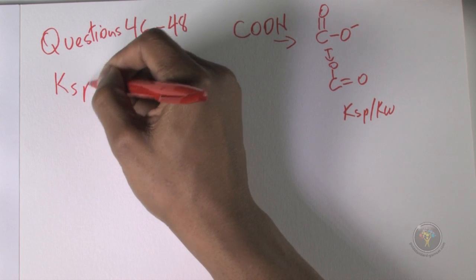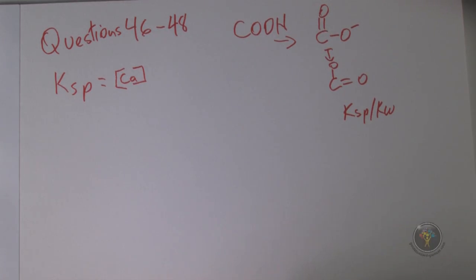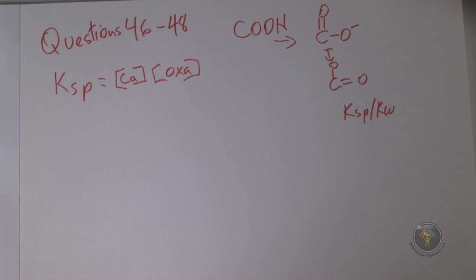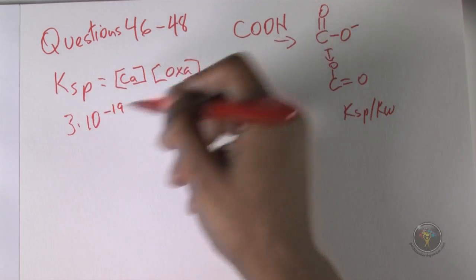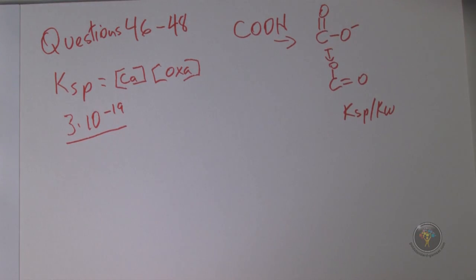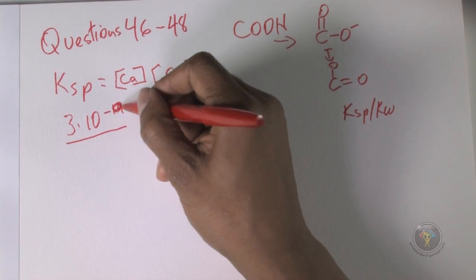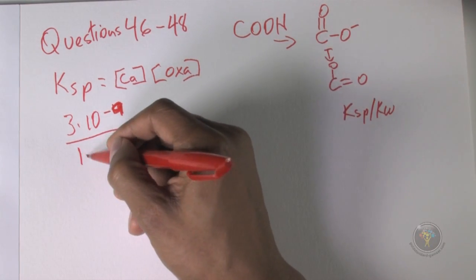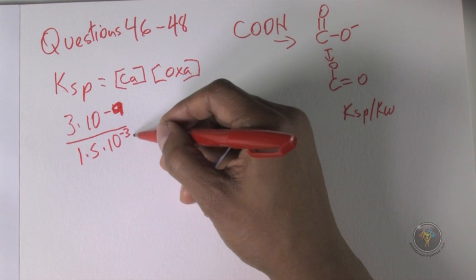The question is, what is the minimum concentration of oxalate ion needed to form kidney stones? We use the KSP and we know that KSP equals the concentration of the products that are solubilized, and that's going to be calcium times the oxalate anion. We do have the value for the KSP, which is 3 times 10 to the minus 9. And so we just have to divide it by the concentration of calcium, which is given to us as 1.5 millimolar. So that's 1.5 times 10 to the minus 3, because that's millimolar.